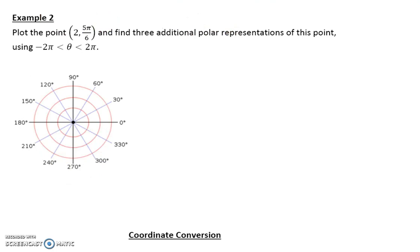Plot the point 2, 5 pi over 6. So remember that that is the same thing as 150 degrees. And then find three additional polar representations of this point using negative 2 pi is less than theta is less than 2 pi. So again, that's like negative 360 degrees and positive 360 degrees. So we know we're going to graph 2. So we come out to 2. And then we're going 150 degrees. So we're going all the way down to here. And so we want to graph this point right here.